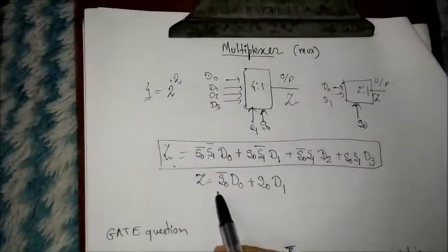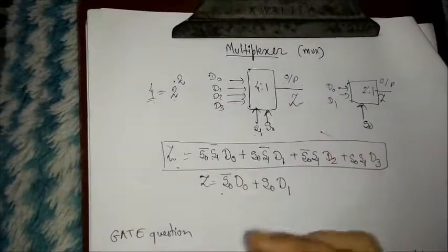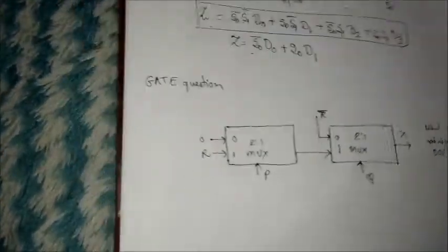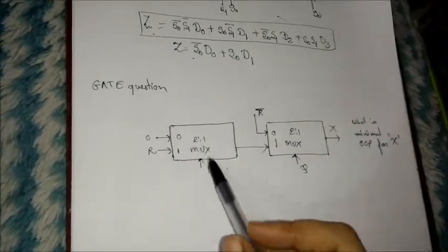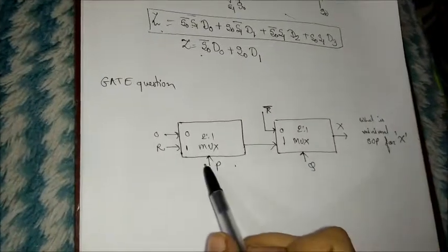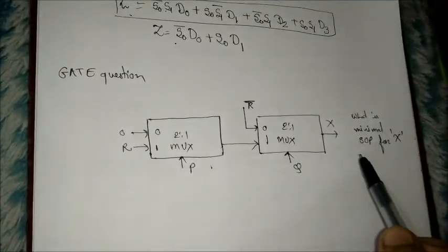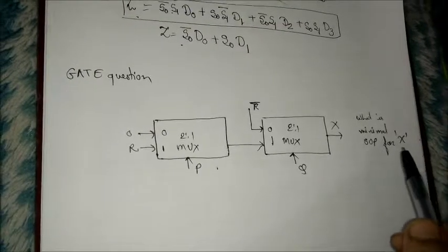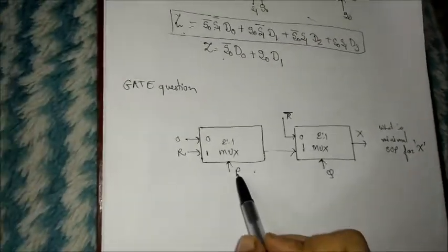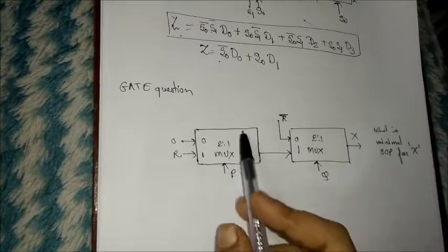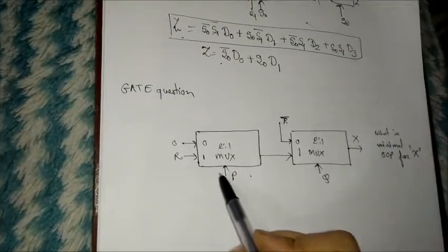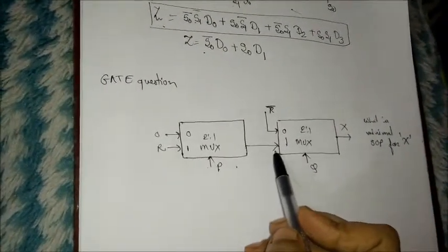So this is how your 2-to-1 MUX will look like. Now let us see a GATE question that has been asked in examination. They have given you two 2-to-1 MUX connected in this way, and they have asked what will be the minimal sum of product equation for X. First, we will find out the sum of product equation for the first MUX, and that will be given as an input to the next MUX.